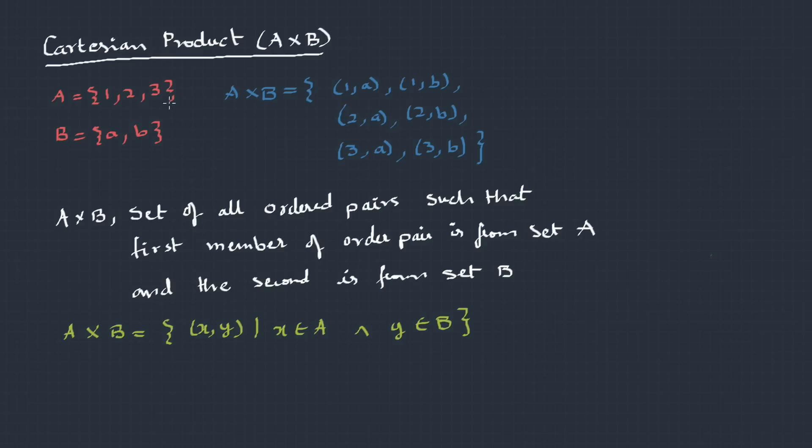What do you think will be the cardinality of this kind of a set? Look here, A is 3 elements, B has 2 elements. So, A cross B is 3 into 2, 6. So, the cardinality of A cross B is basically number of elements of A multiplied by number of elements of B. So, mod of A cross B is mod A into mod B.